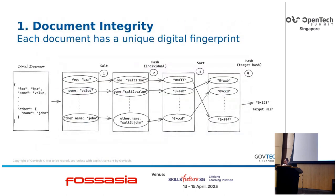When we issue an Open Attestation document, we take the raw document in JSON format and put it through a process called wrapping. The end product is a unique hash that represents the document — if the document is tampered with, it won't be possible to derive the same hash. For each property, we salt to prevent rainbow table attacks, then flatten and encode the properties as a string. Each field is hashed with its value and salt, all output hashes are stored in an array, and finally we hash the array of hashes to produce a target hash — essentially a hash of hashes.